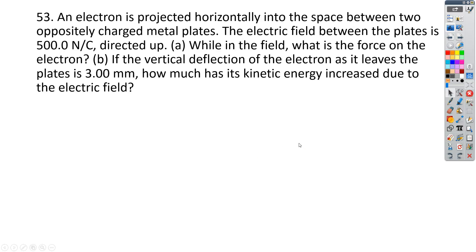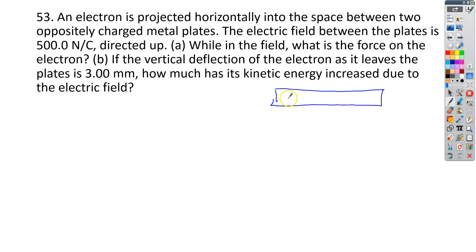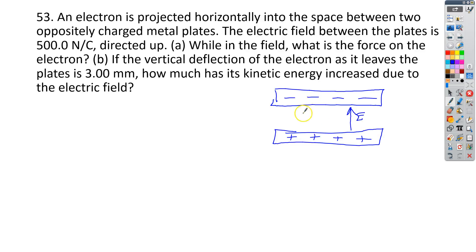For number 53, we have an electron projected horizontally into the space between two oppositely charged plates. The electric field between the plates is 500 newtons per coulomb directed up. They want to know the force on the electron, and if the vertical deflection as it leaves the plates is 3 millimeters, how much kinetic energy is increased due to the electric field. The top plate is negative, the bottom plate is positive — that's why the field is directed up. The force on the electron is directed down, and as it moves through, it is deflected downward.